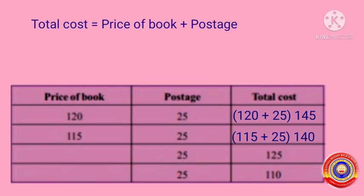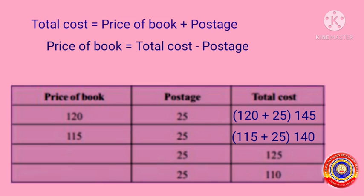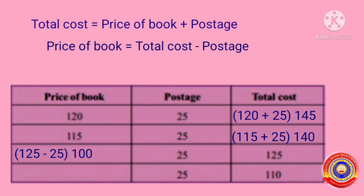Now we have to find the price of book. How will you find the price of book? Price of book is equal to total cost minus postage. Here the total cost is equal to 125 and the postage is equal to 25. For finding the price of book we subtract postage from total cost: 125 minus 25, that is equal to 100. Next question: total cost is equal to 110 and the postage is equal to 25, then the price of book is equal to 110 minus 25, that is equal to 85.